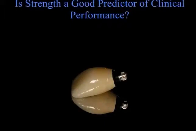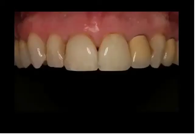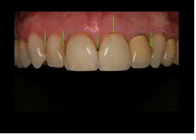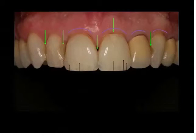Is strength a good predictor of clinical performance? We have a patient that presents, like you see here, with failing composite restorations, root surfaces that are exposed and discolored, and cracks and slight fractures and chipping of the anterior dentition.